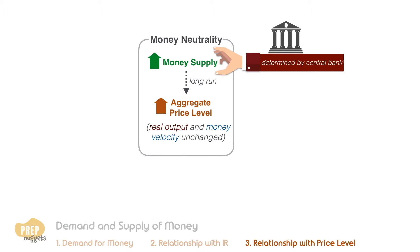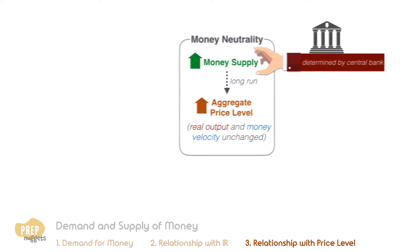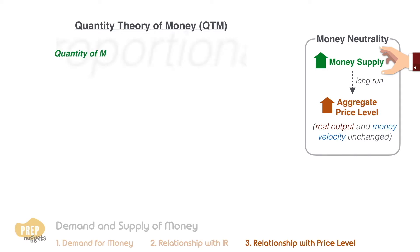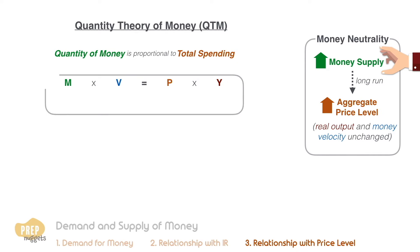To explain this, we first need to understand the relationship between money and price level. The quantity theory of money states that quantity of money is proportional to the total spending in an economy. This theory is explained in terms of this equation, known as the quantity equation of exchange.